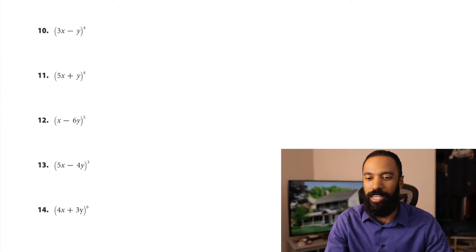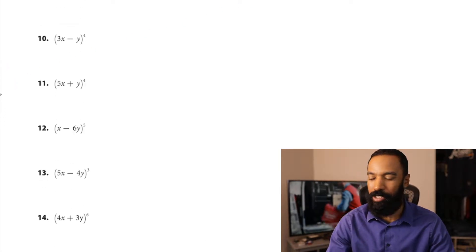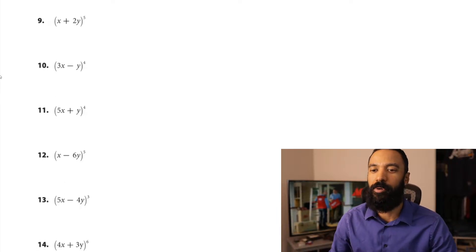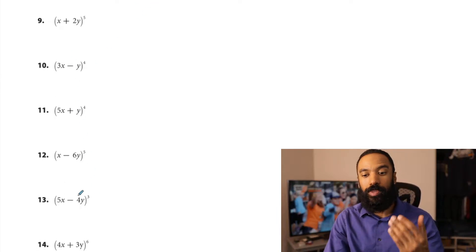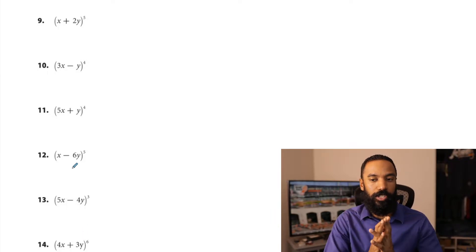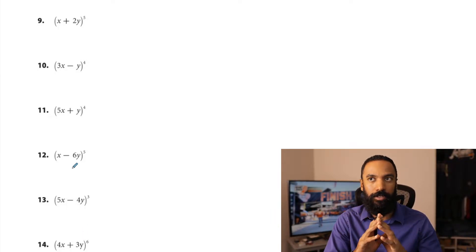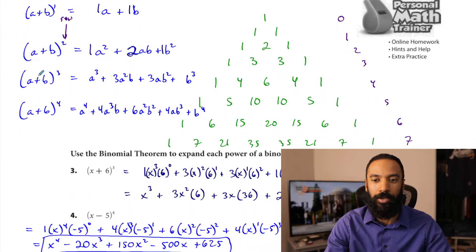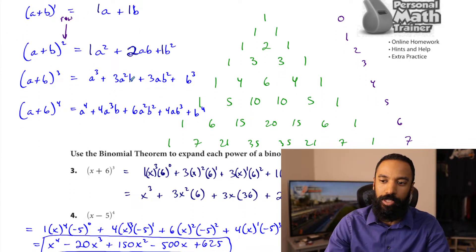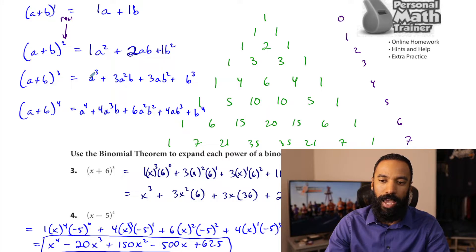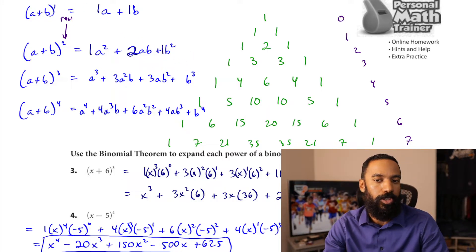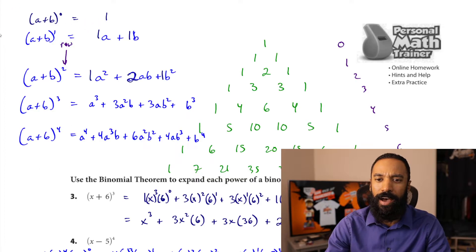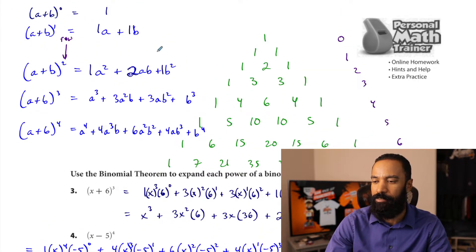The ones with multiple variables are just another reminder to be careful of what you have. As A's go down, B's go up. Make sure you include them. Working faster now with row five — one, five, ten, ten, five, one. Starting with one times x to the fifth times 2y to the zero. Then five times x to the fourth times 2y to the first. Plus ten times x cubed times 2y squared. Plus ten times x squared times 2y cubed. Plus five times x to the first times 2y to the fourth. Plus the last: 2y to the fifth.